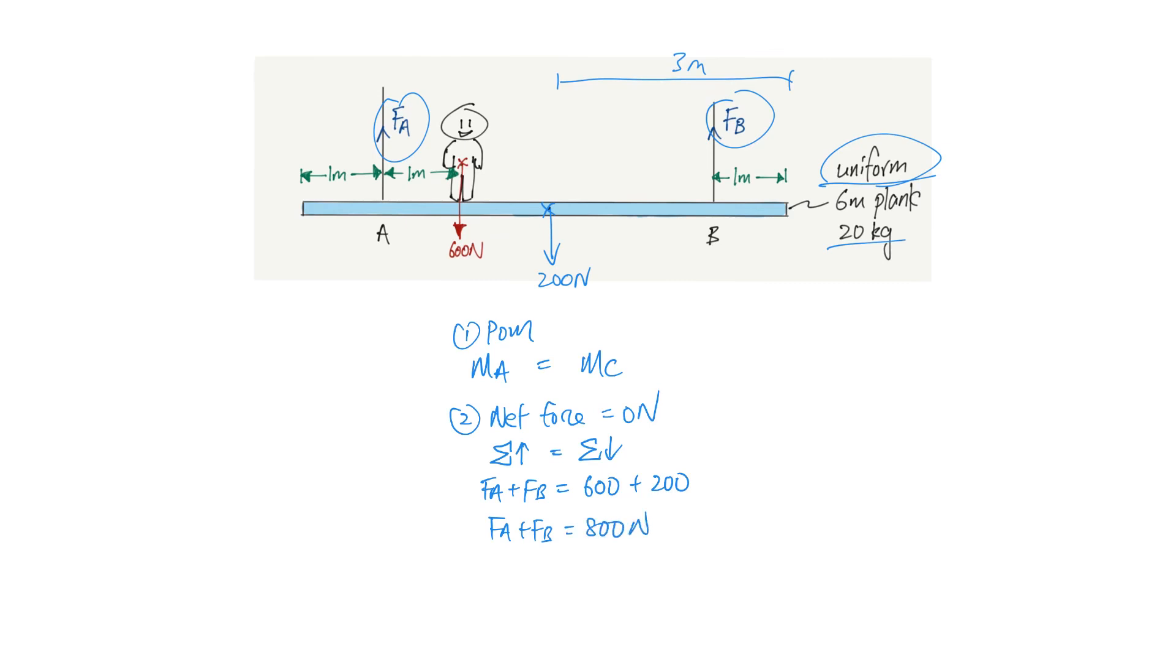Now, for this right now, the man is nearer to A. You should know that FA, the tension in FA has to be greater than in FB. So these are things that you must know so that later on when you get your answer, you can roughly check. So when will FA equals to FB? If this man were to shift to the right and he's standing exactly at the center, then the total load of 800 N will be shared equally between FA and FB. So these are the various things that you must know before you start the question.